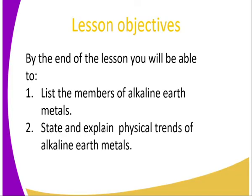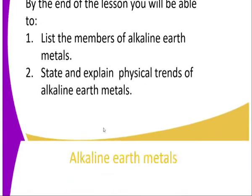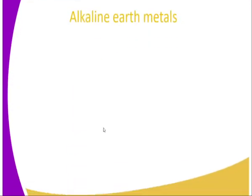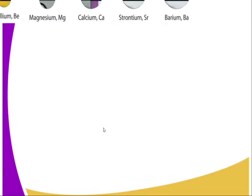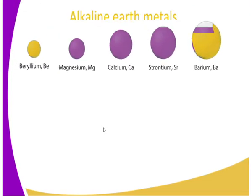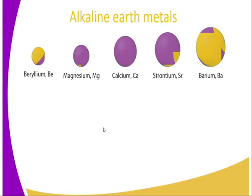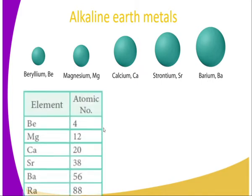State and explain physical trends of alkaline earth metals. Alkaline earth metals include beryllium, magnesium, calcium, strontium, as well as barium.